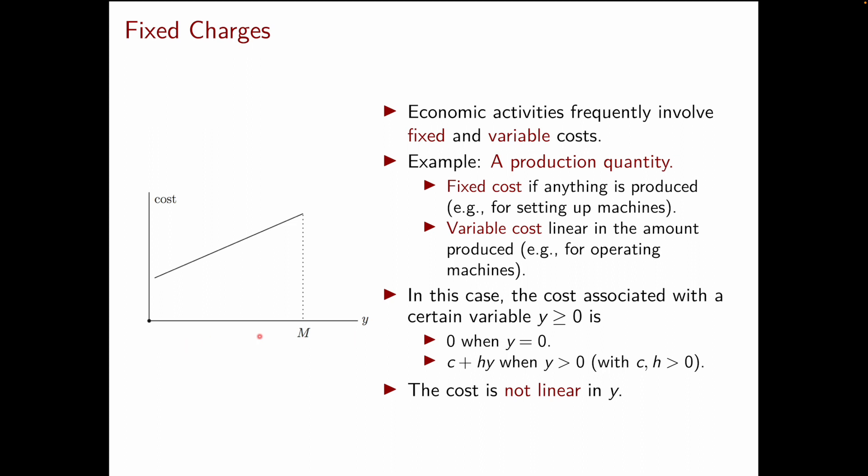Along the horizontal axis we have the variable y and on the vertical axis we have the corresponding production cost. As you can see for y equal to zero the cost is equal to zero but then it jumps to a positive amount as soon as y is strictly positive and then it keeps increasing in a linear way.